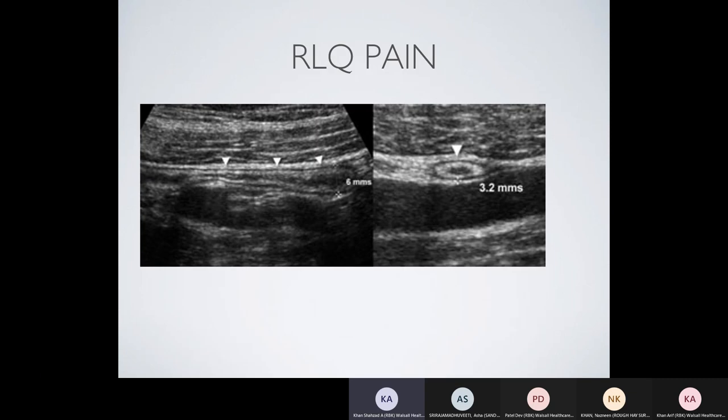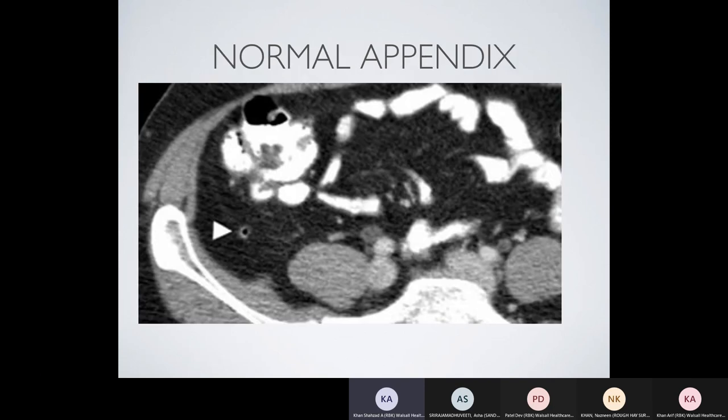Moving to right lower quadrant pathologies — an ultrasound of the right lower quadrant shows a tubular blind structure with a targetoid appearance in axial view. This is a normal-looking appendix with an outer wall measurement of 3.2 mm. On CT, a normal appendix appears as a small structure in the right iliac fossa with a central speck of air.